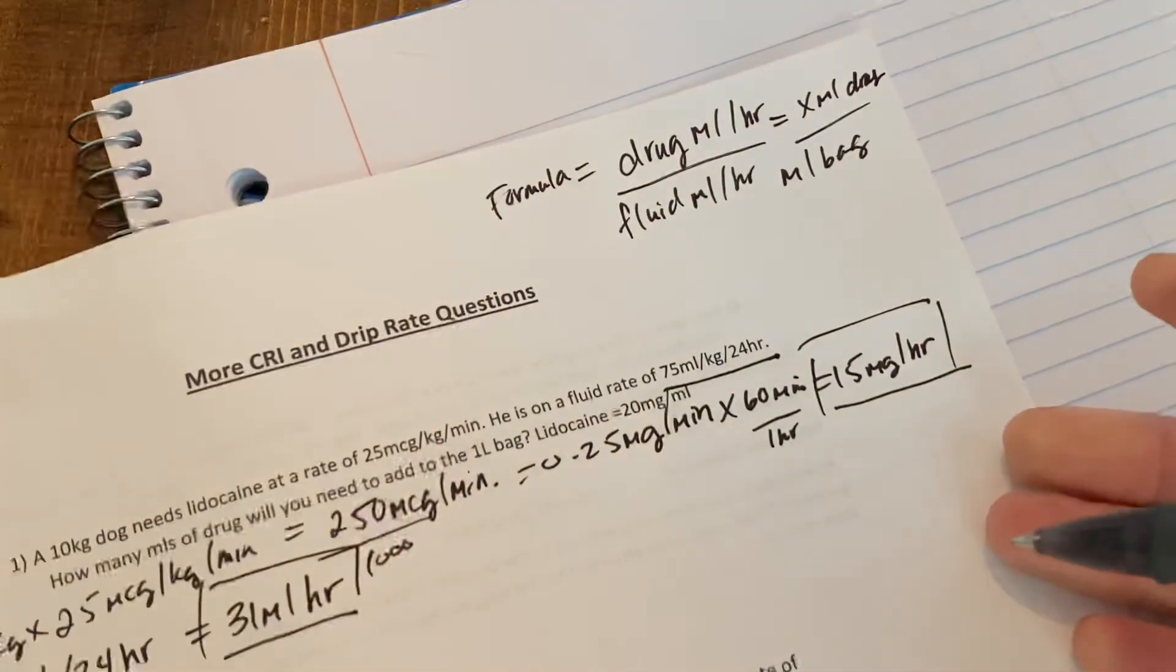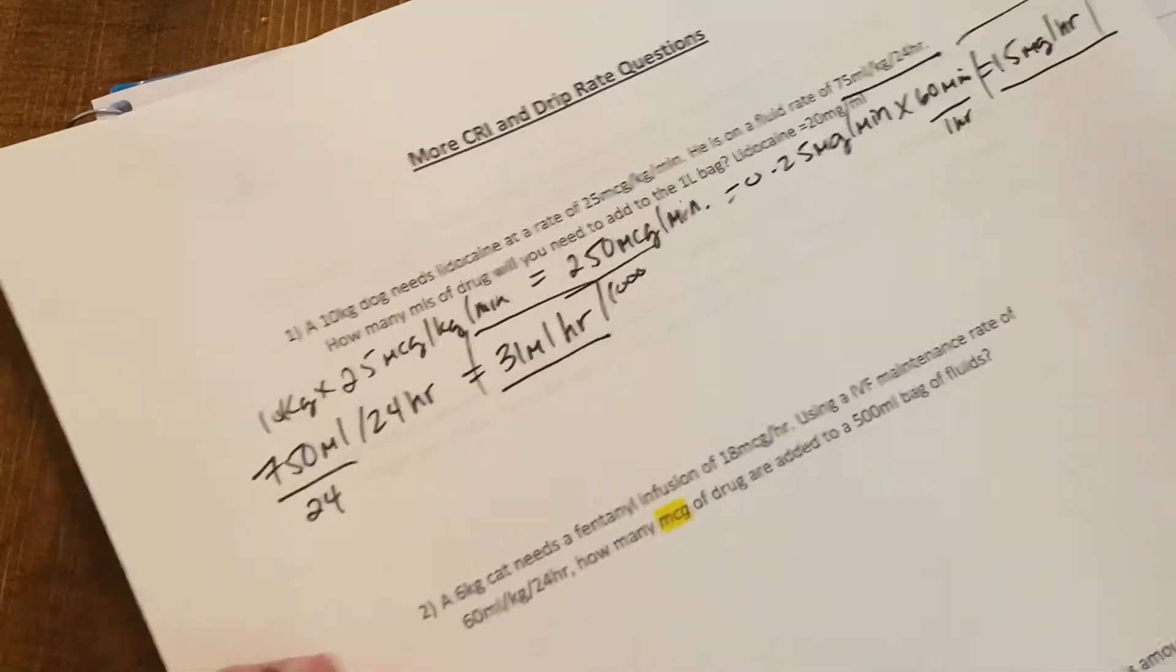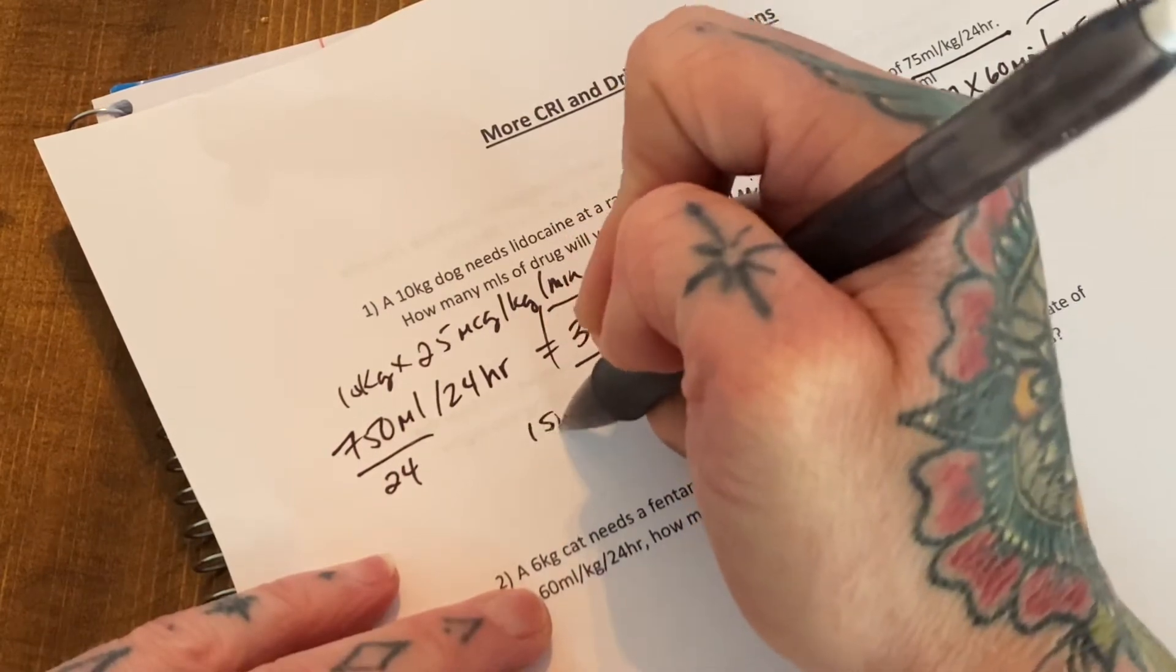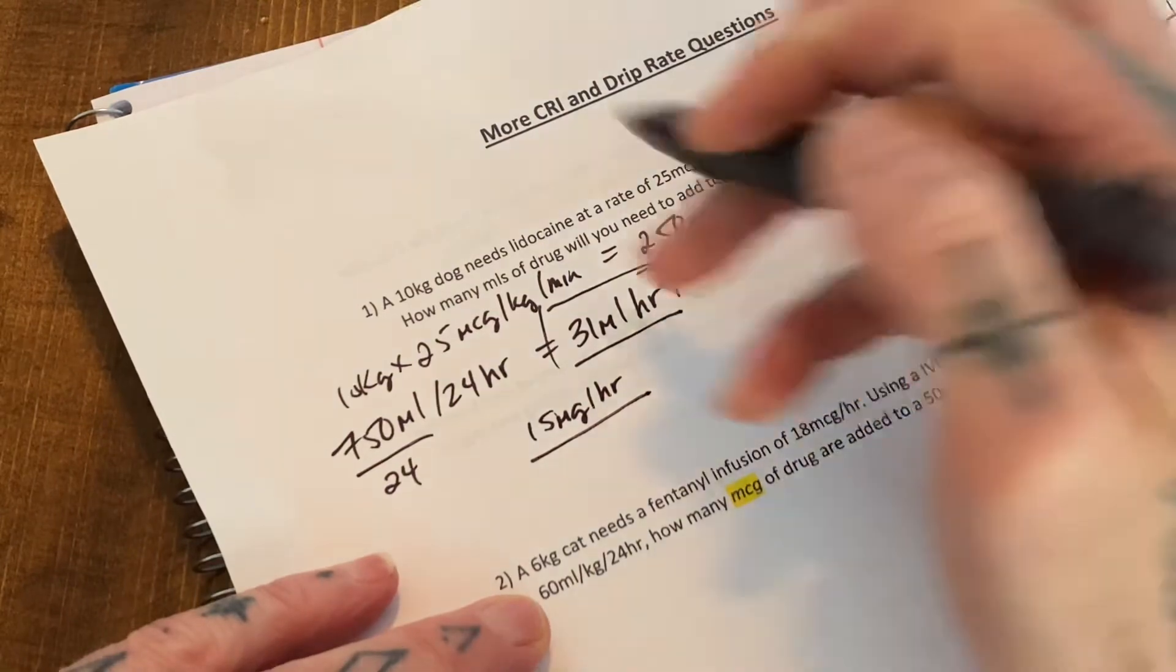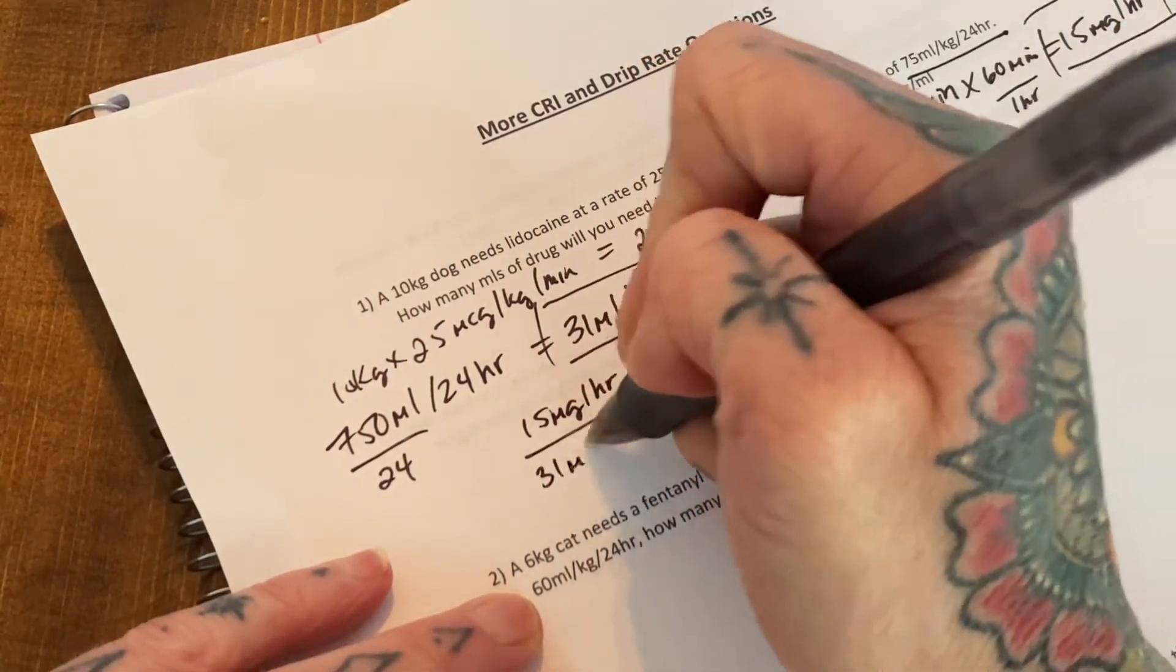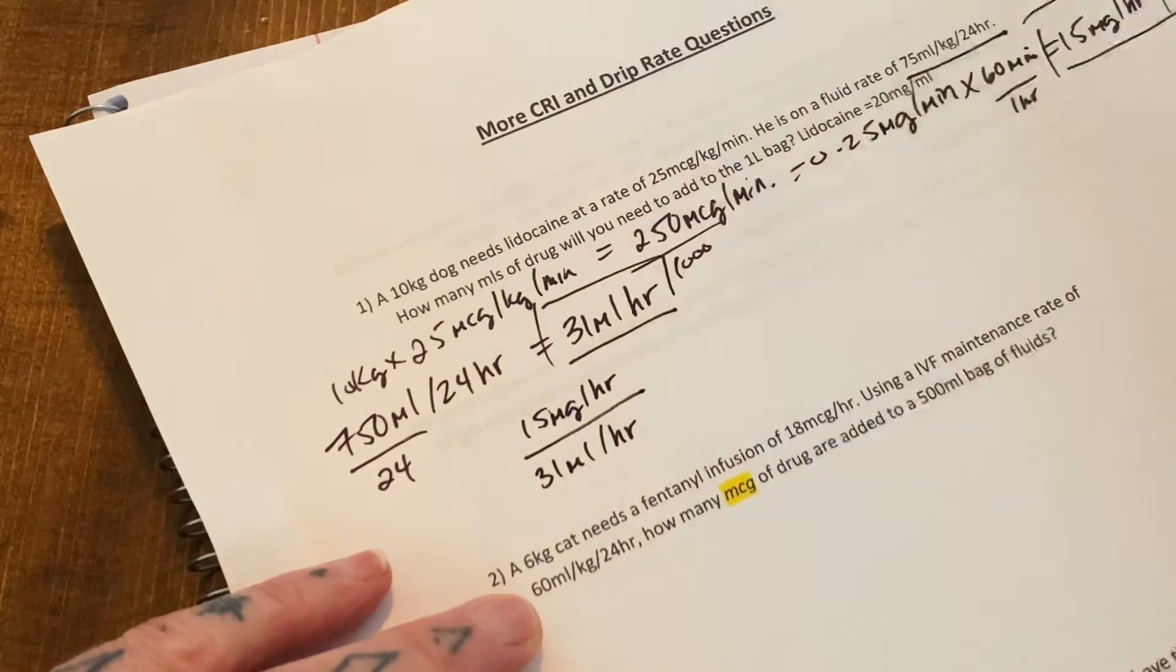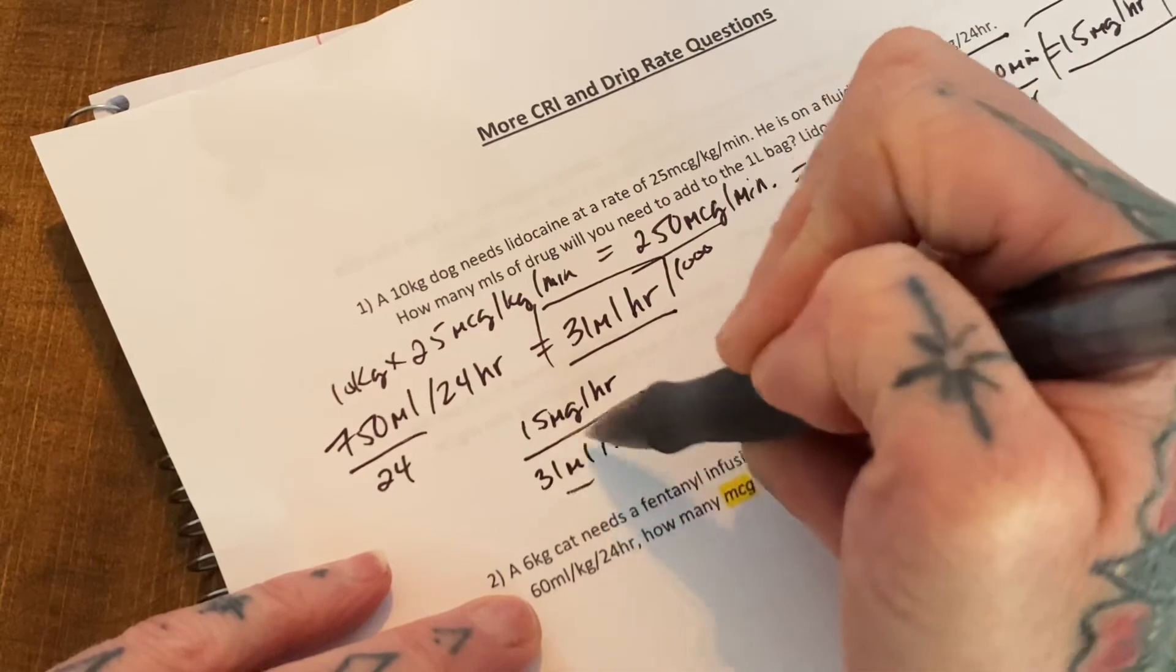So our drug in mils per hour is 15 milligrams per hour. So I'll go down here. So 15 milligrams per hour. Our fluid rate is 31 over 31 mils per hour. Oh, sorry. We have to turn 15 milligrams into mils so that these both make sense.